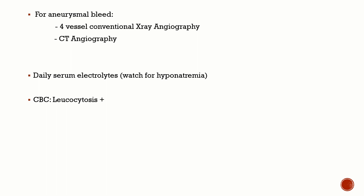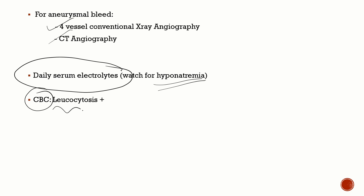Once SAH is diagnosed, you must locate the aneurysm because if left untreated, the patient risks re-rupture or re-bleed, which has a very bad prognosis. To detect the aneurysm, you can use four-vessel conventional X-ray angiography or CT angiography. Monitor serum electrolytes daily because hyponatremia is very common and profound in SAH. The complete blood count may show non-specific leukocytosis.